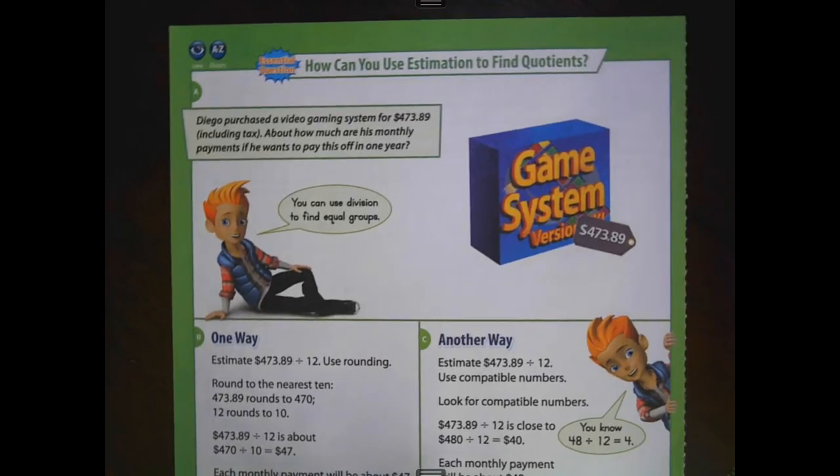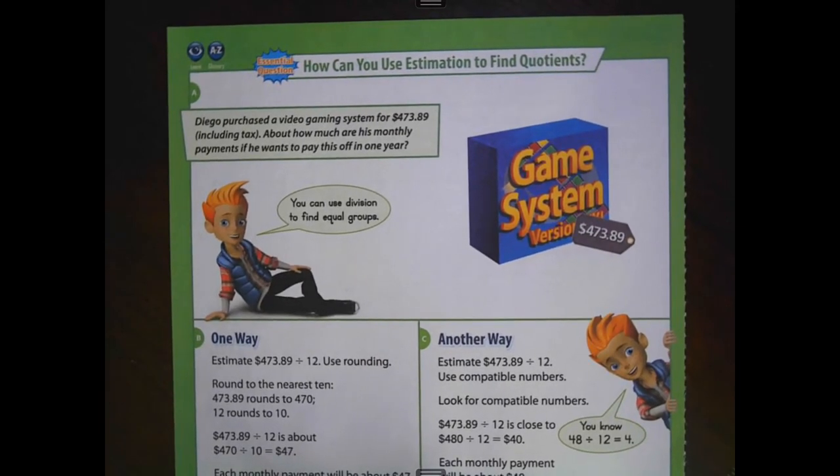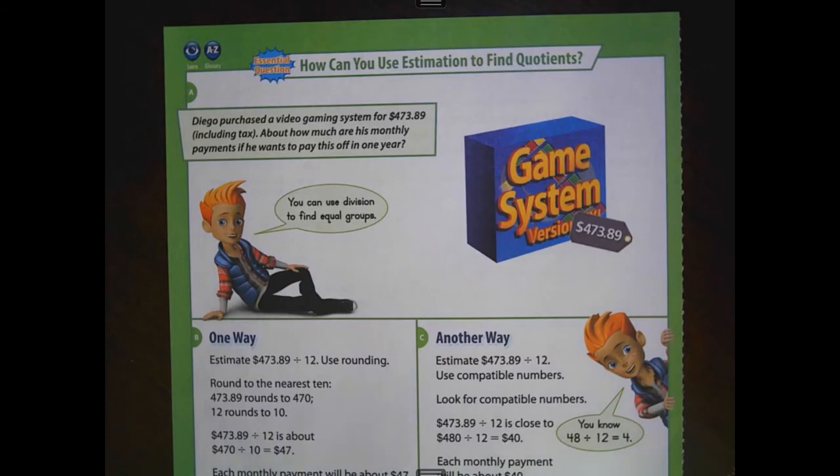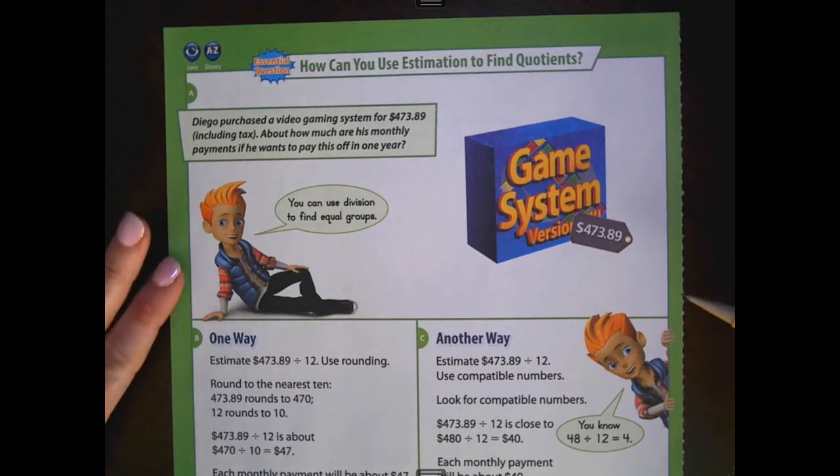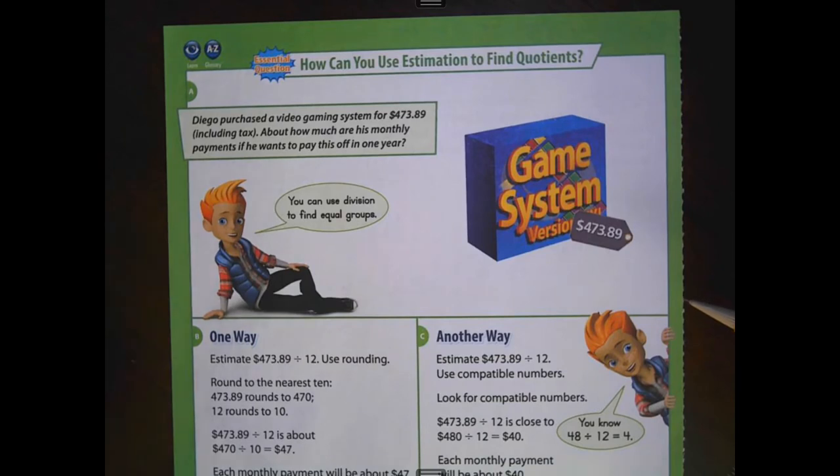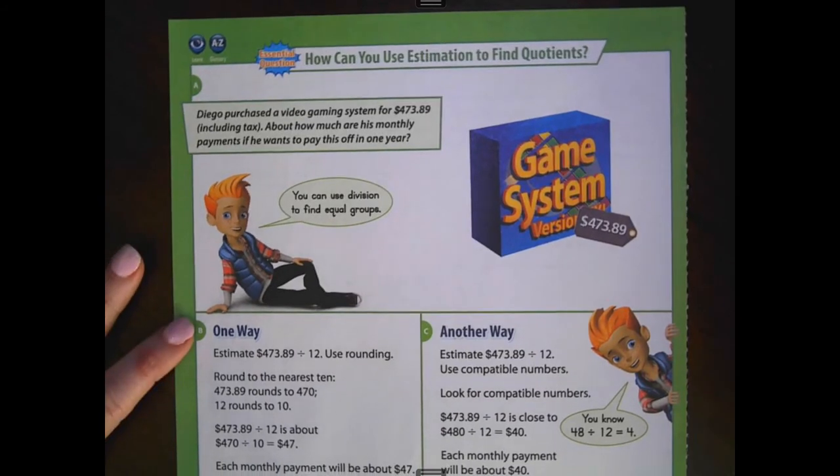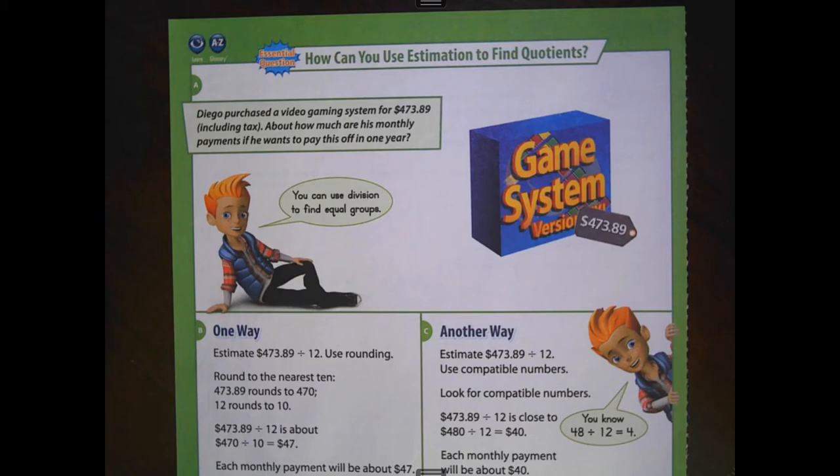Our essential question to guide us through the lesson is how can you use estimation to find quotients? We're going to use the visual learning example here to practice this concept with decimals. You guys have already been using estimation to divide whole numbers. I ask you that you always estimate first. That helps you, especially with those larger divisors, figure out what your first digit might be in your quotient.